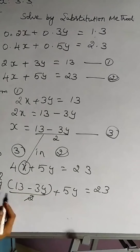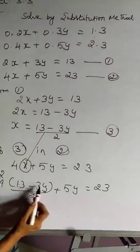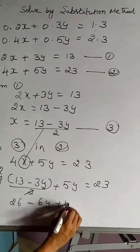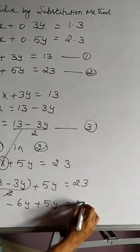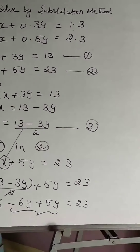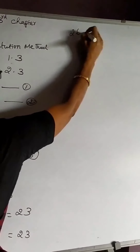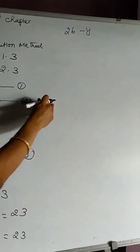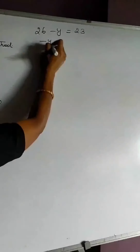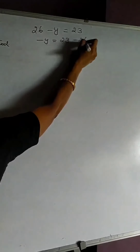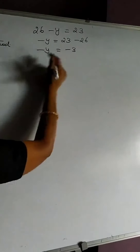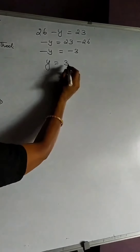Here I do the cancellation — the 2 is common for both terms. Carrying out the multiplication we get 26 − 6y + 5y = 23. Simplifying these two terms gives 26 − y = 23. Therefore −y = 23 − 26 = −3. Removing the minus sign on both sides we get y = 3.